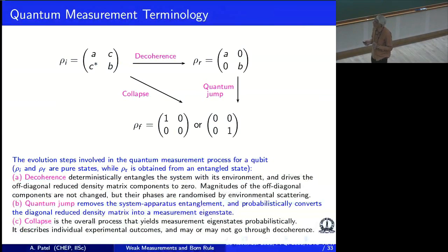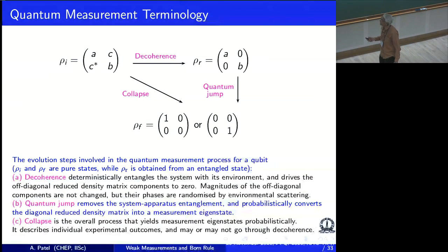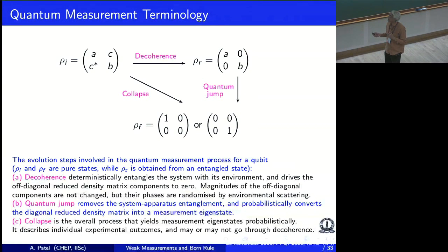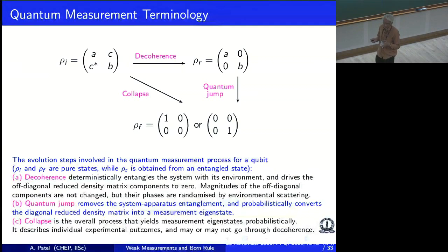There are lots of words thrown around in this subject, so let me define some of them. One is called decoherence. What happens in decoherence is that the system interacts with its environment. The environment has lots of degrees of freedom and there is no real way to shield anything from the environment. In the process of decoherence there are scattering events between the system and the environment.